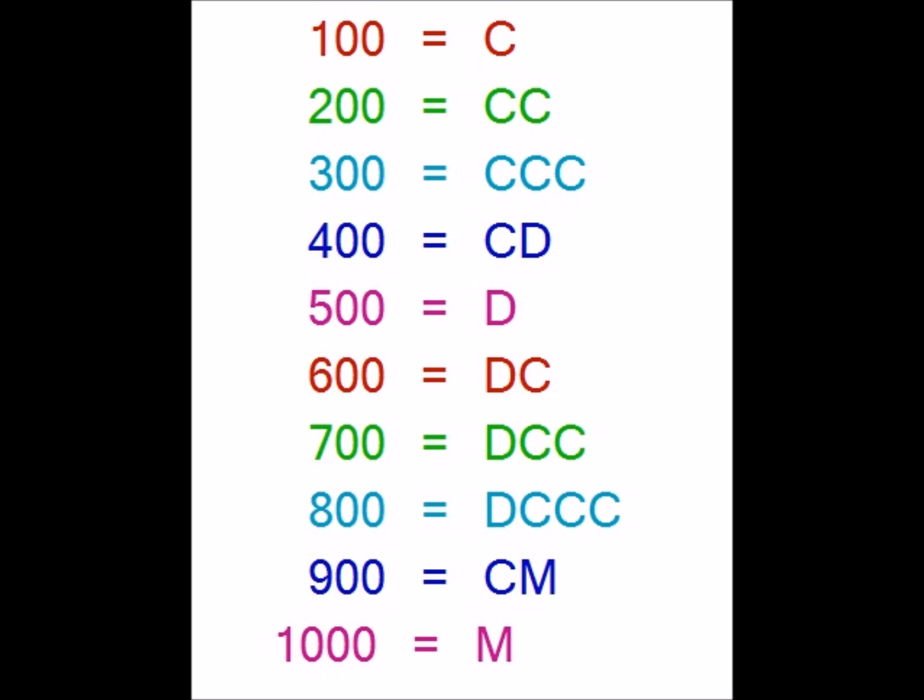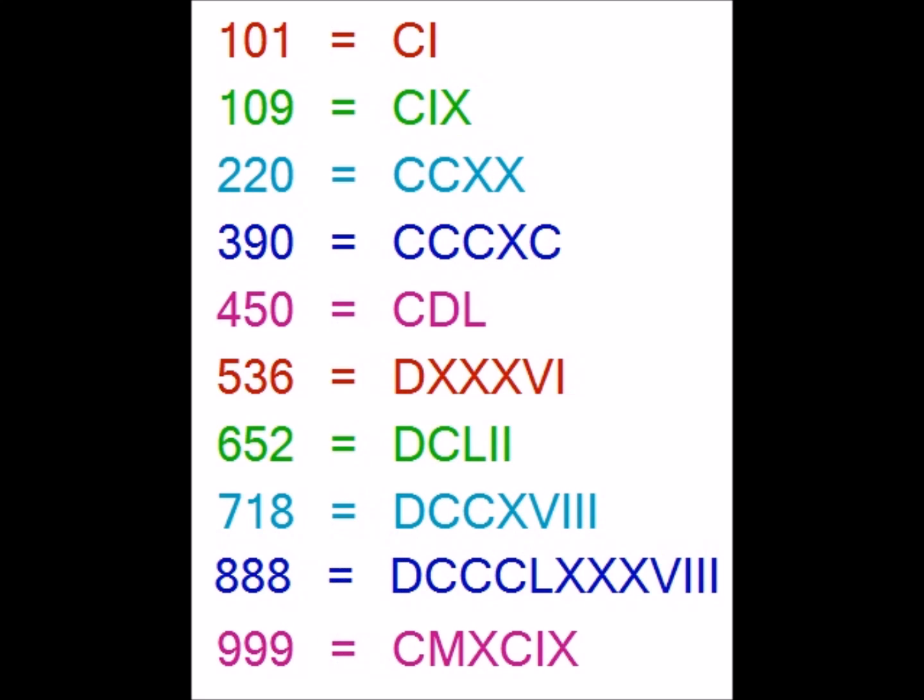For 900 we use a rule similar to 90 and 9 — we use the next symbol, which in this case is M, and prepend C to it. So CM gives 900. For 1000 we have the basic symbol M.